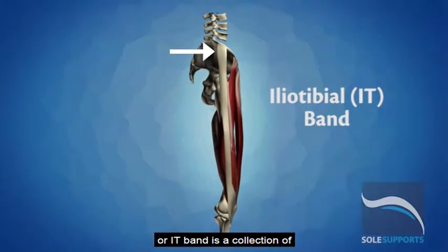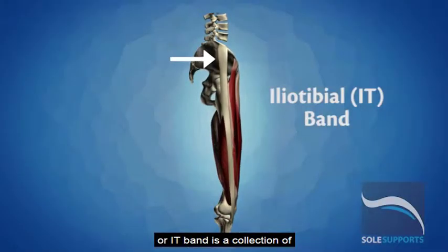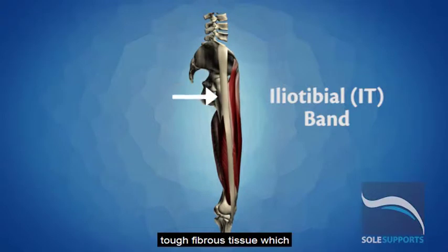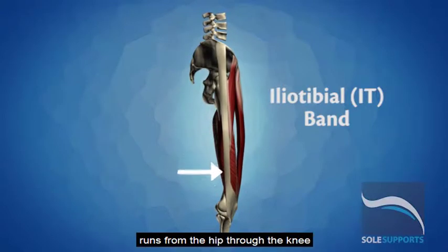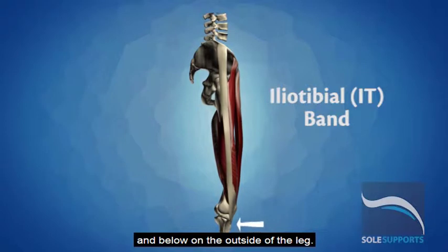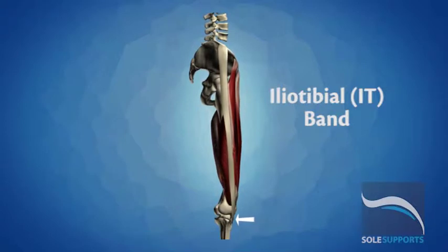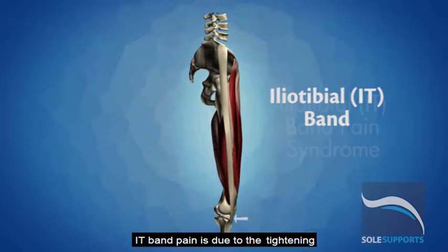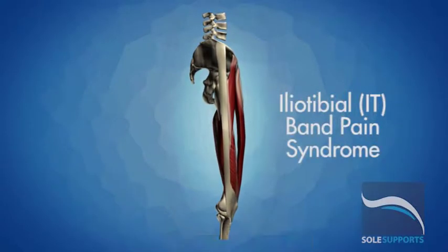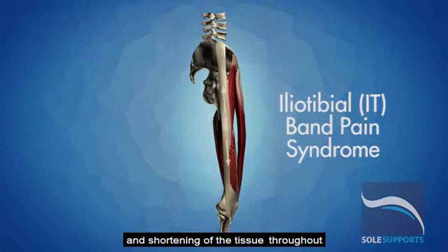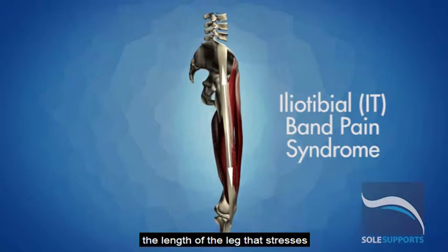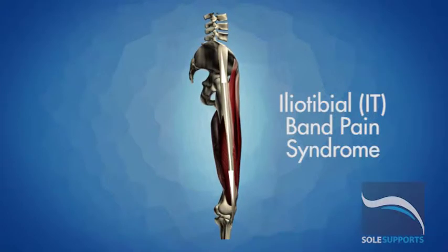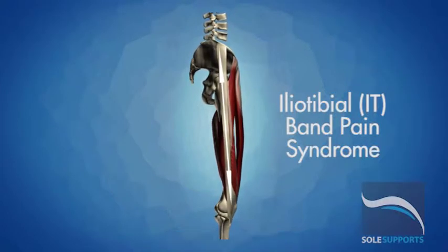The iliotibial or IT band is a collection of tough fibrous tissue which runs from the hip through the knee and below on the outside of the leg. IT band pain is due to the tightening and shortening of the tissue throughout the length of the leg that stresses the IT band to its limits.